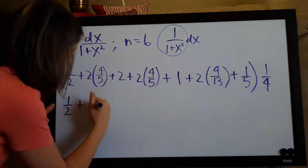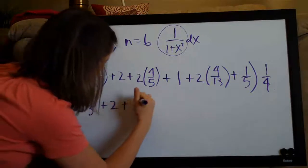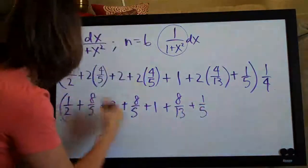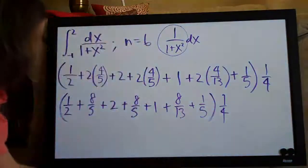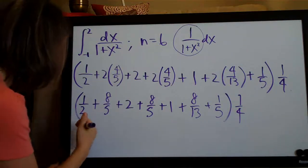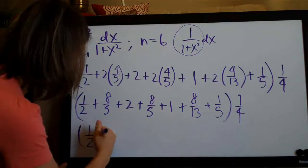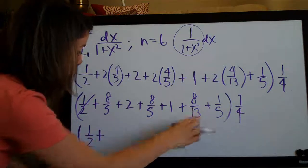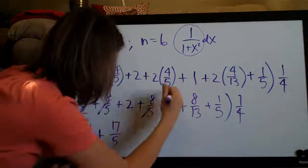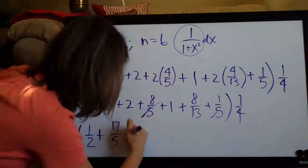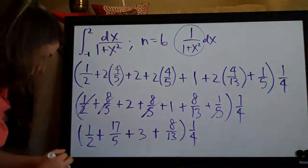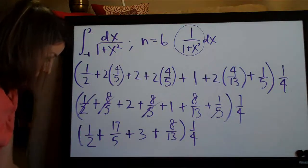So 1 half plus 8 fifths plus 2 plus 8 fifths plus 1 plus 8 thirteenths plus 1 fifth times 1 fourth. So, in this case, I could simplify. I'll do 1 half and then I'm gonna combine this 8 fifths, 8 fifths and 1 fifth. So, that's 16, 17 fifths. I'm just gonna do this because it makes it easier to plug into my calculator. And then I have 2 plus 1 is 3. So, plus 3 plus 8 over 13 times 1 fourth. So, now that I've gotten this down to something that's easier, I'll go ahead and plug this into my calculator.